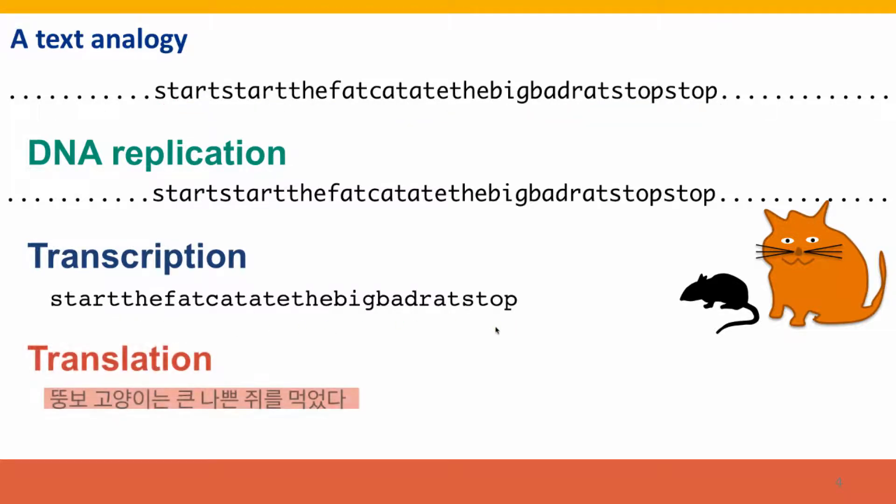And then translation takes this sequence, uses the start here signal and the stop here signal, and takes the information in between and translates it into a completely different language. In this case, I used Google translation to translate it into Korean. That's the text analogy.